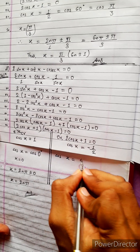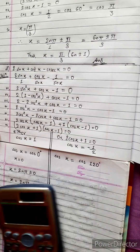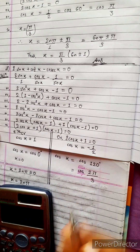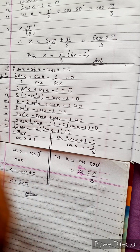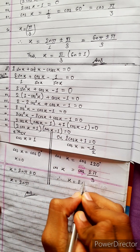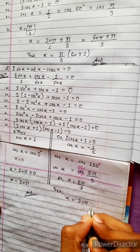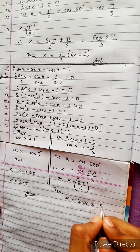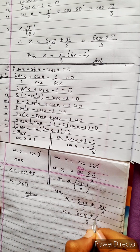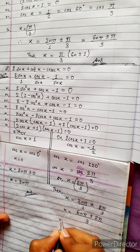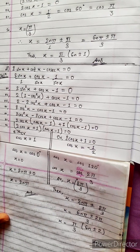For cos x = -1/2: cos 120° = -1/2, and 120° = 2π/3. So cos x = cos(2π/3), giving x = 2nπ ± 2π/3. Taking LCM 3, this becomes x = (6nπ ± 2π)/3, or x = π/3(6n ± 2).